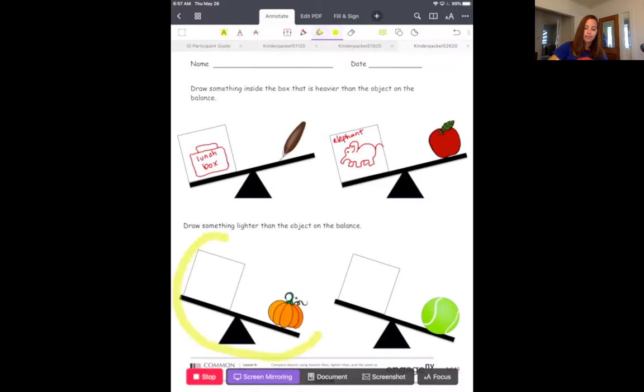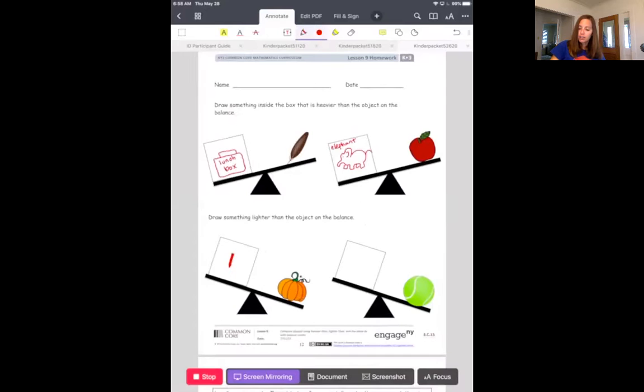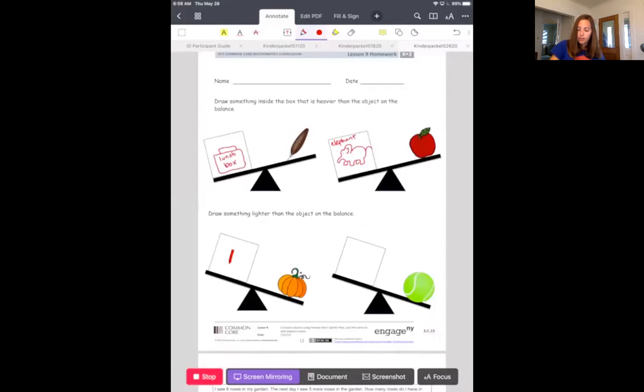Let's look at the bottom. Draw something lighter than the object on the balance. Ooh, lighter. So we don't want to tip the scale anymore. So something that would be lighter than a pumpkin. I'm going to draw a crayon. A crayon would be much lighter than a pumpkin. And like I said, you don't have to do the same thing that I'm drawing. That was my cat, Franklin. You can draw your own thing. But if you want to draw the crayon, go ahead. Because a crayon would be much lighter than a pumpkin.